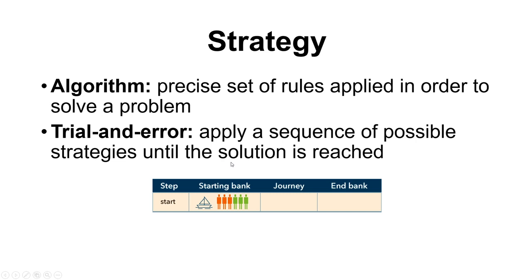The textbook walks through an orcs and hobbits problem where they must cross a river on a boat with limited capacity. You can never leave a hobbit alone with the orcs, so you always need equal proportions — otherwise violence will happen. The text walks through how you would go about solving this, what strategies you might use, as a visual illustration of that problem-solving process.